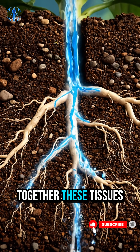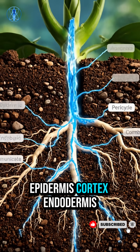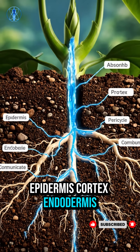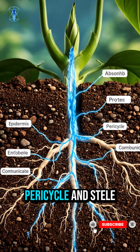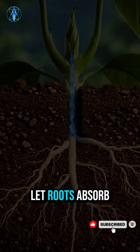Together these tissues — epidermis, cortex, endodermis, pericycle, and stele — let roots absorb.